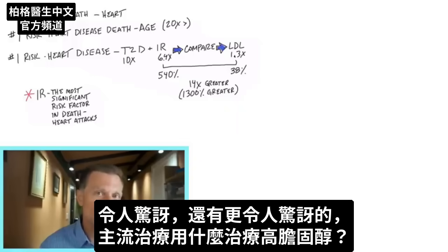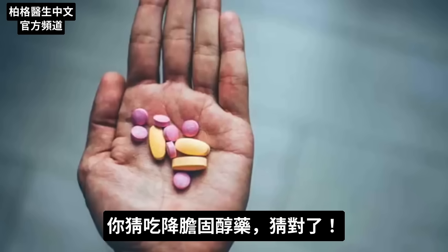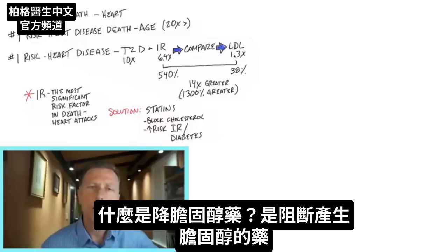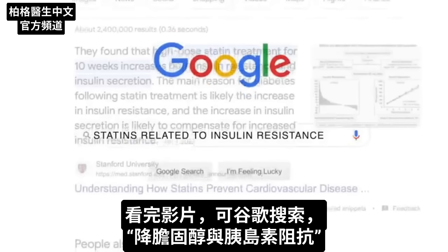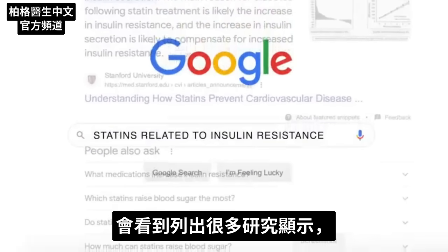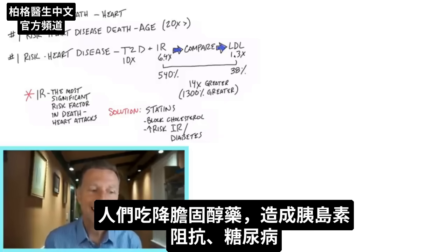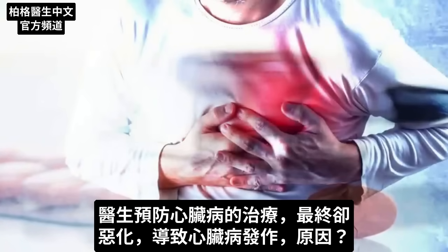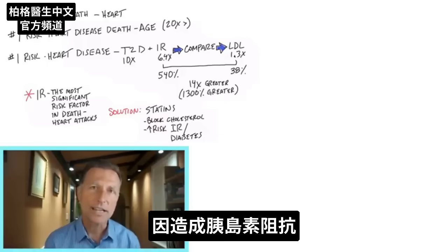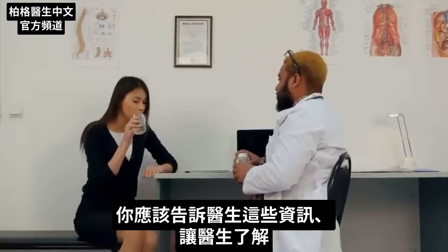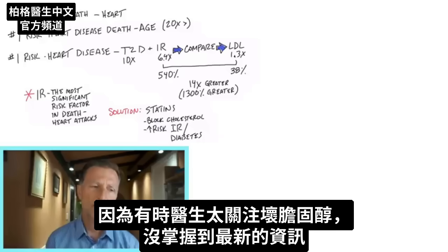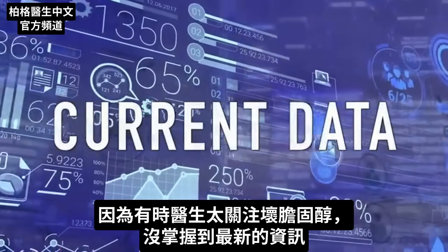There's something even more interesting about this topic. The mainstream treatment for high cholesterol is statins — drugs that block cholesterol production in the body. Go to Google and type in 'statins related to insulin resistance' and you'll find many studies showing that when people take statins, they can develop insulin resistance and even diabetes. So the very treatment to prevent a heart attack could end up worsening it because of insulin resistance. Anything that increases insulin resistance is not a good idea when preventing a heart attack. It's data you should bring up with your doctor.